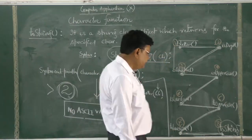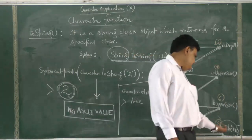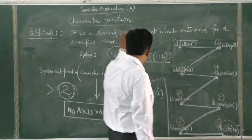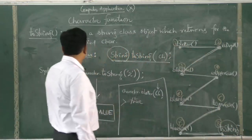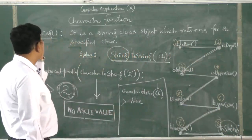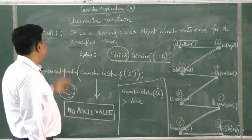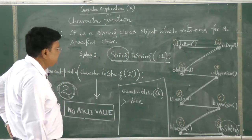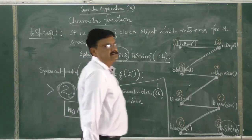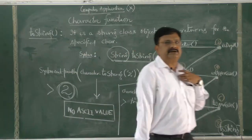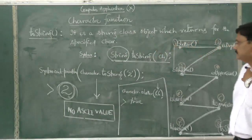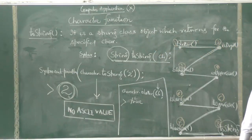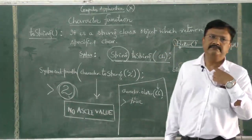The last one, toString, is different because the return type is string. toString is a String class object which returns the string for the specified character. This brings to the end of this class and we will discuss further in our next classes. Thank you.